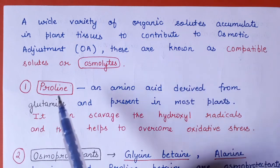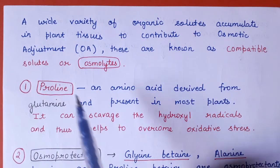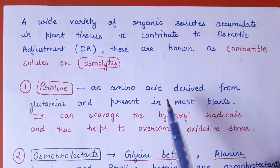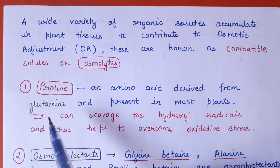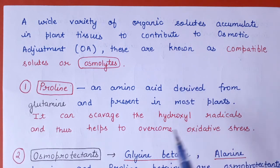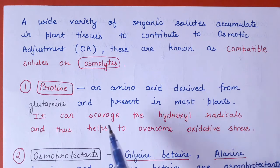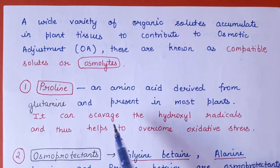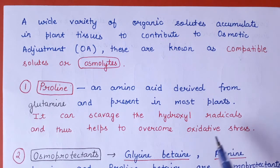One example is proline. Proline is an amino acid derived from glutamine and is commonly found in plants under stress. It helps to scavenge hydroxyl radicals and also plays a role in oxidative stress tolerance.